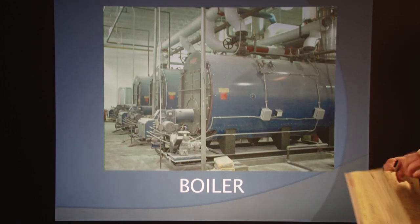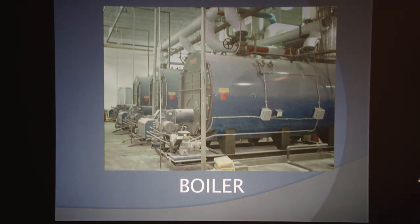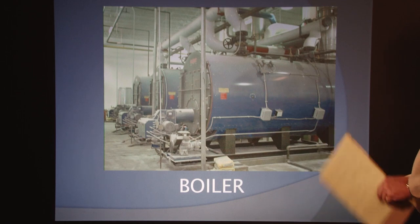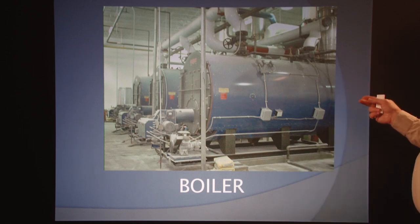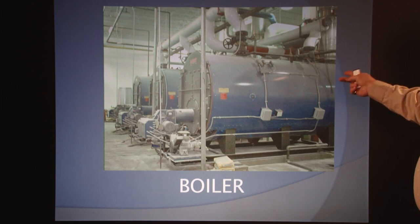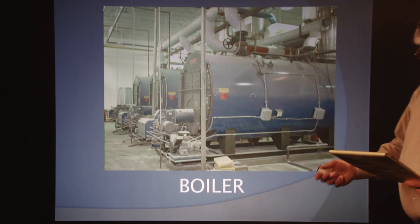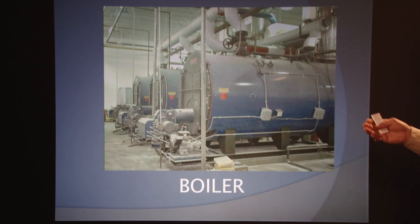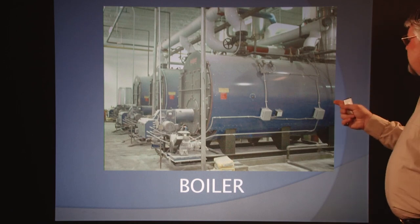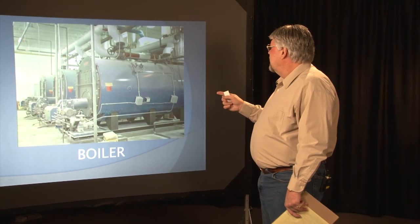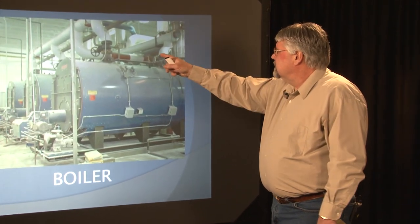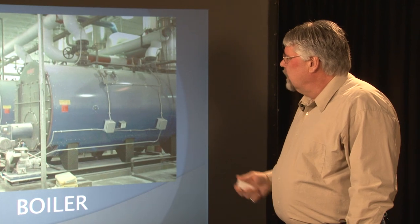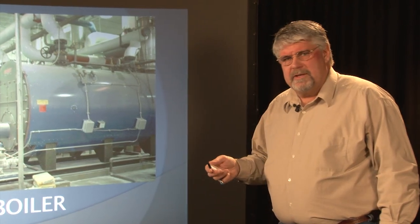Boiler. Everyone basically knows what a boiler is. These are some huge boilers in an industrial setting — looks like we've got three of them. A boiler is a closed heating appliance needed to supply hot water or steam for space heating, processing, or power purposes. They can do different things rather than just produce heat. These are probably steam boilers — you can see the valves on the top. Boilers can be used for many different things rather than just producing heat.